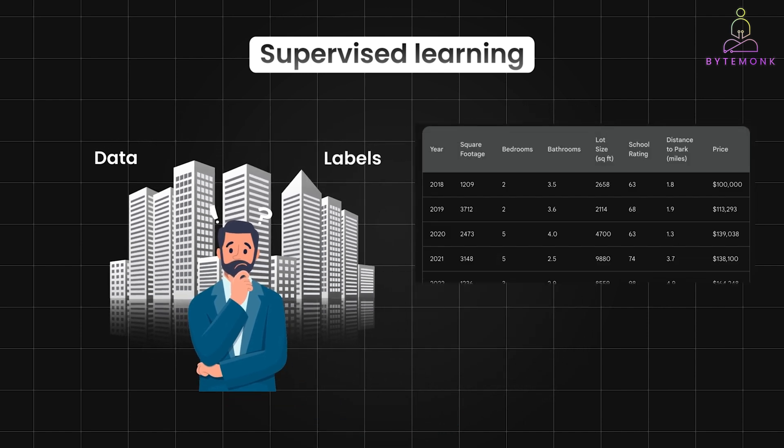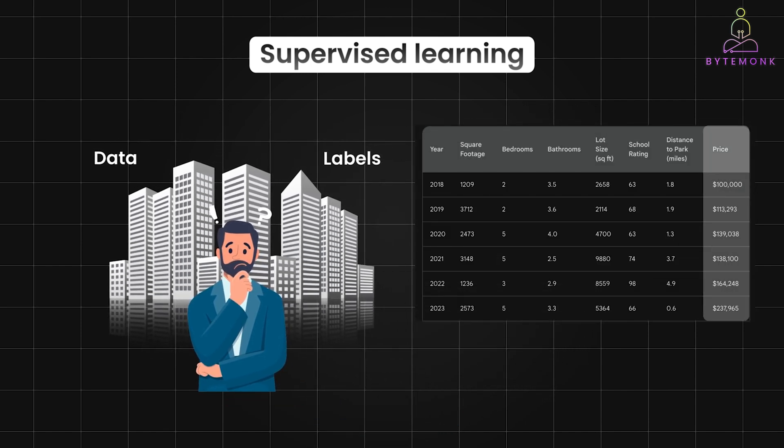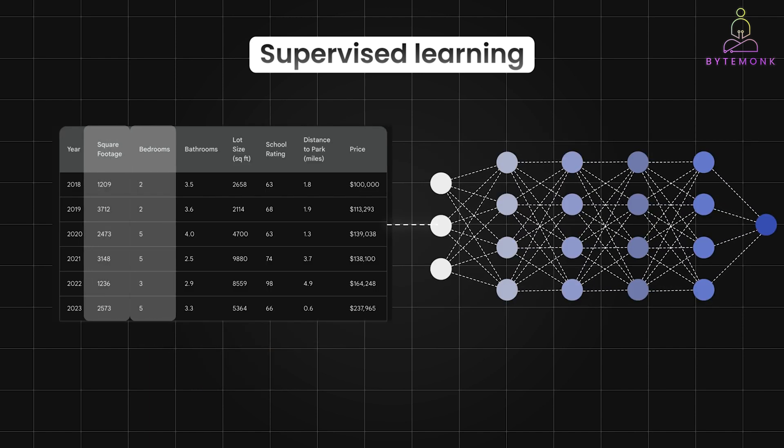In the housing price example, the model learns to predict the selling price of a house based on its features such as square footage, number of bedrooms, and location.